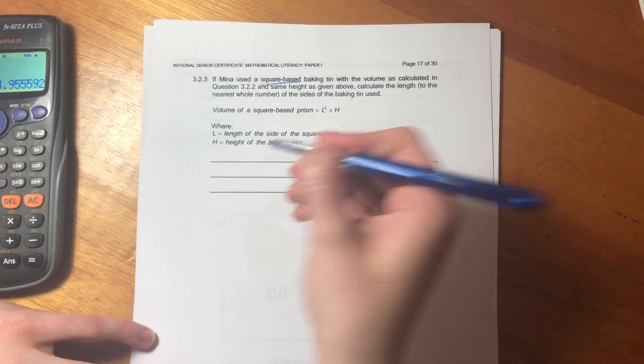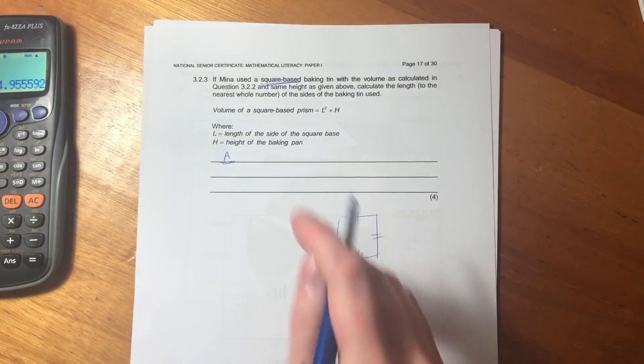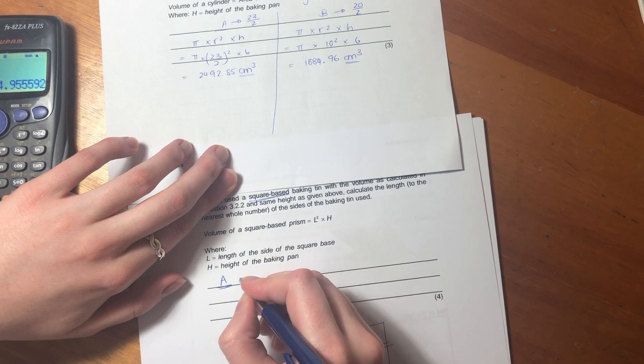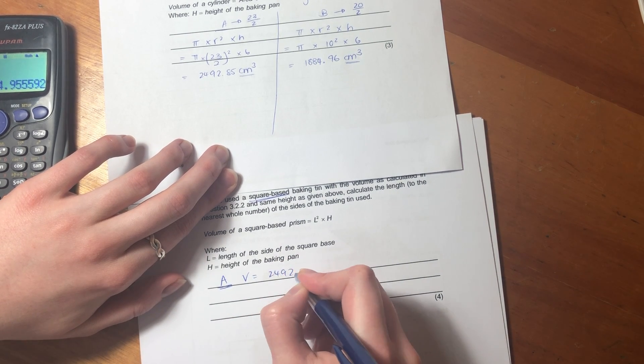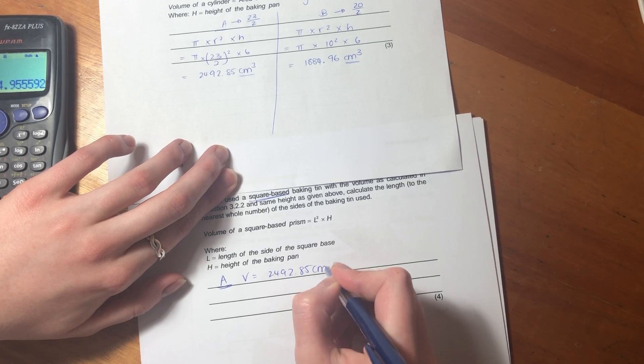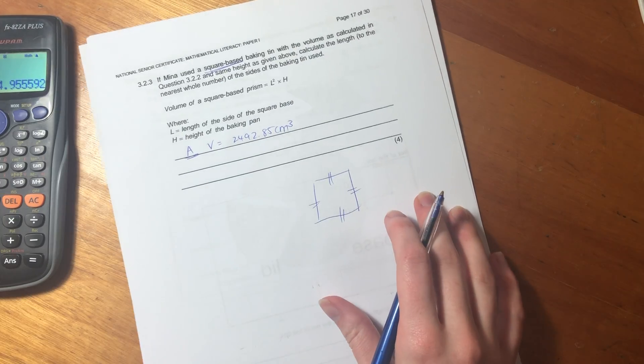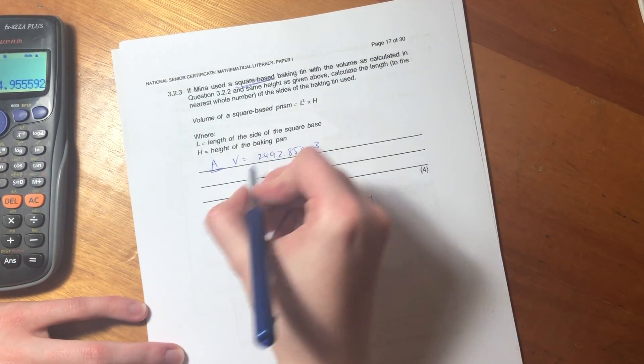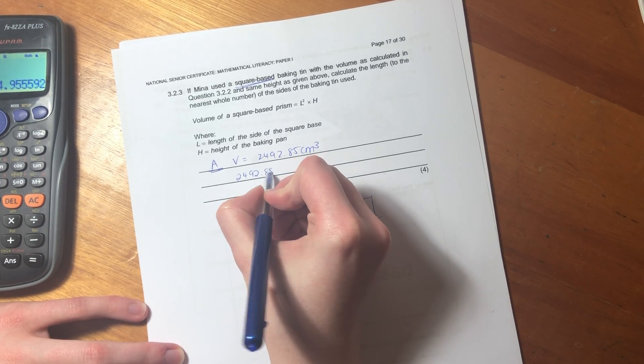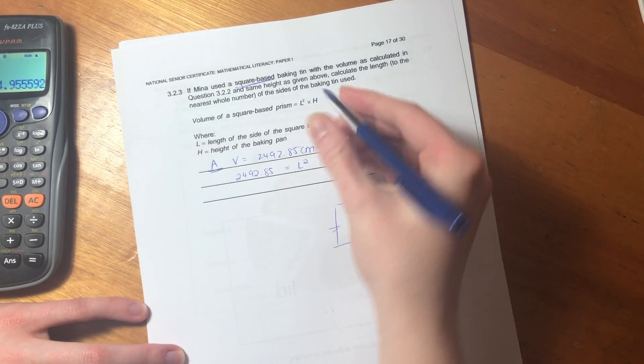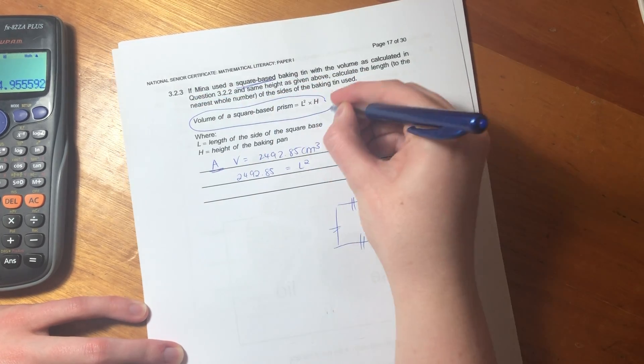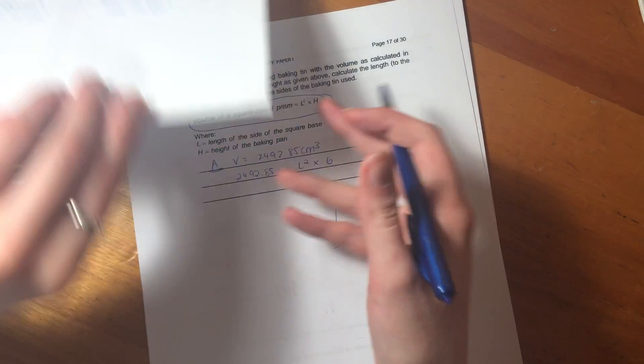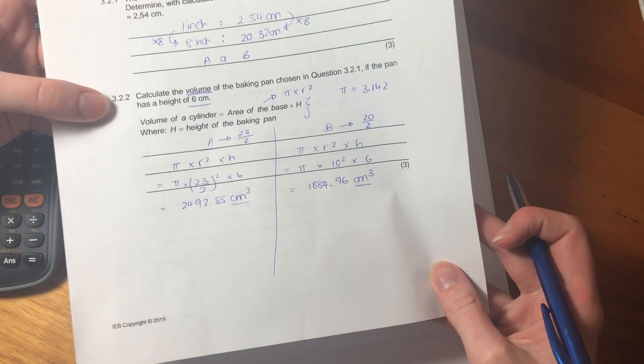So again, I'm going to do it for A and B. Okay, so for A, we know that the volume equaled 2492.85 centimeters cubed. And I'll do B just now. So that's what the volume equaled. So now we're going to sub it in here. So it's 2492.85 equals L squared - so I'm using this formula over here, I'm not just pulling this out of my hat - times 6. Why is it 6? Remember, we were given the height in the previous question.